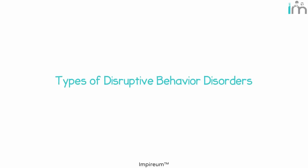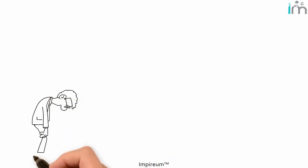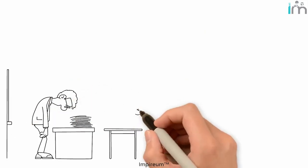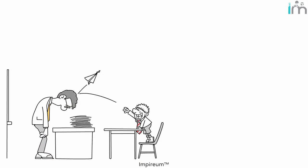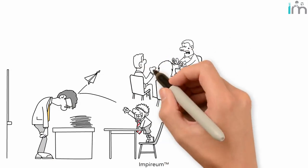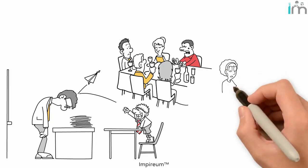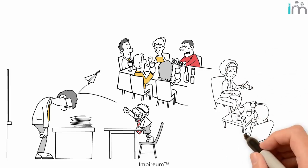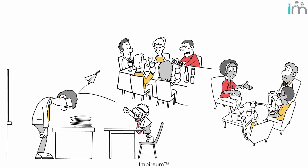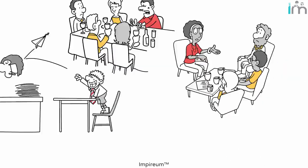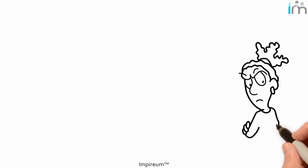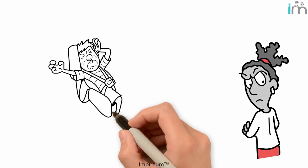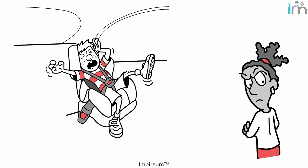Types of Disruptive Behavior Disorders. We've all known someone who seemed to be intentionally disruptive — the class clown in school, the family member always wanting negative attention, or that coworker everyone has a hard time working with. Sometimes it seems like these people don't want to regulate their own behavior, and sometimes it's because they actually can't.